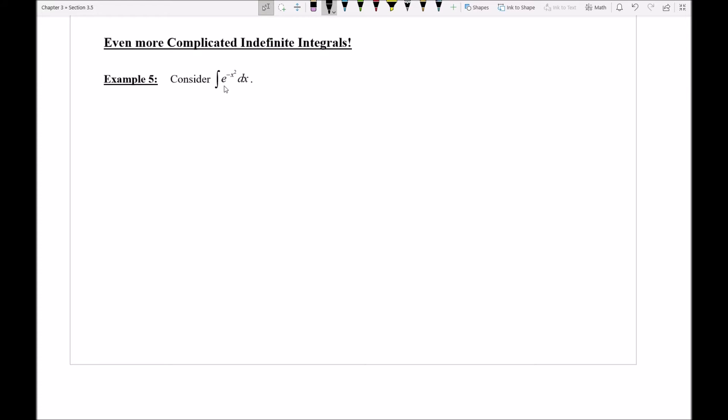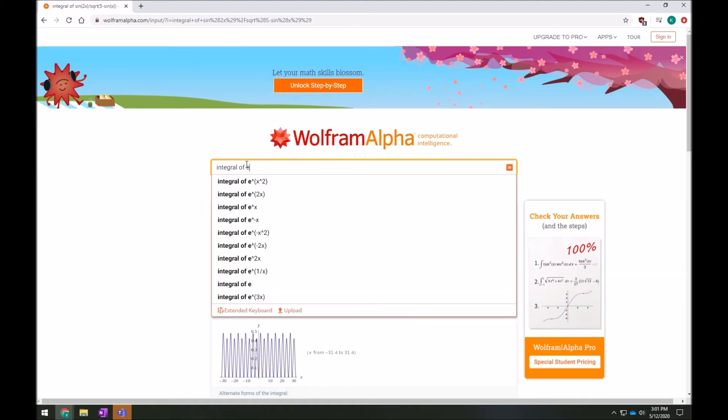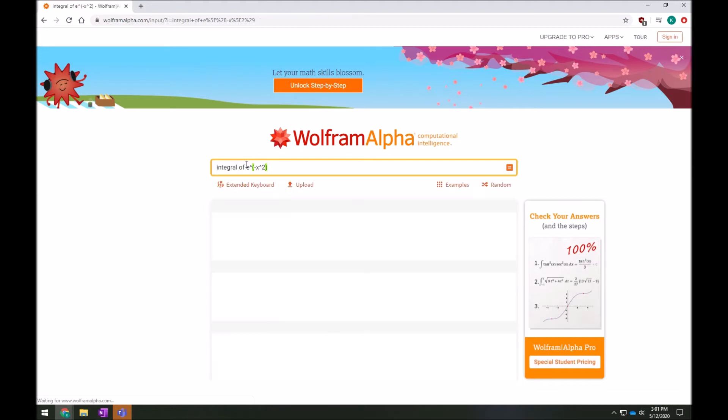But maybe Wolfram can help, right? I mean, maybe that's possible. Let's even go to Wolfram and see what we come up with here. I want an integral of e to the power of negative x squared. Perfect. There it is.